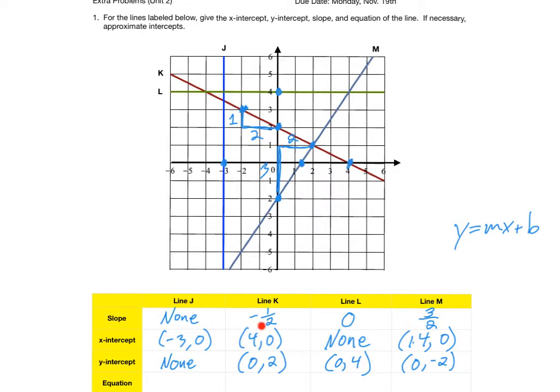And it has a Y intercept of 0 comma 2. Negative 1 half is precisely the M value, the slope in the equation, and the B value is this 2. Notice the X intercept does not play a role in the equation, so our answer is Y equals negative 1 half X plus 2.